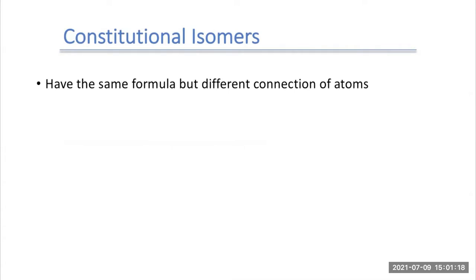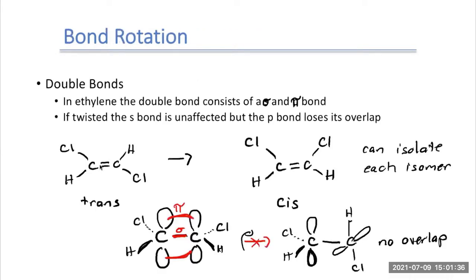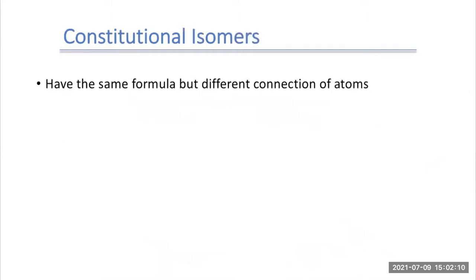We'll see more about these later in the class. Our next group — and probably the larger group — is what we call constitutional isomers. These are the ones that have the same formula but a different connection of atoms. When we were looking at bond rotation, those isomers had the same connection of atoms. Each carbon was bonded to a chlorine, a hydrogen, and double-bonded to another carbon — same configuration of atoms, same bond types. Constitutional isomers have different connections.